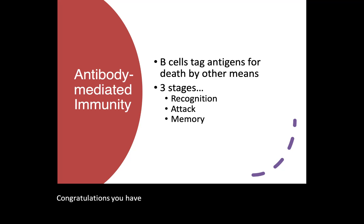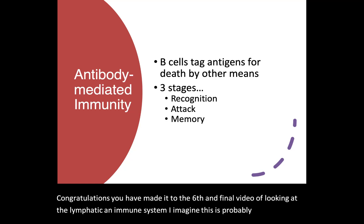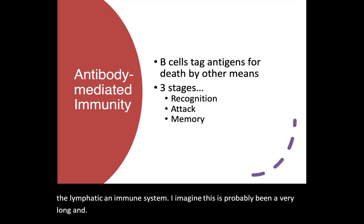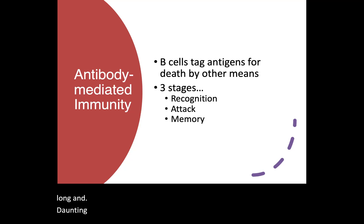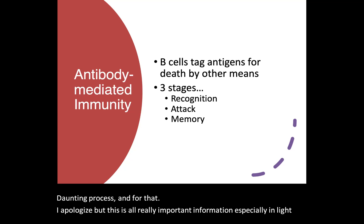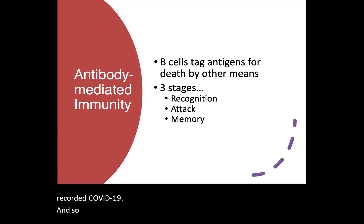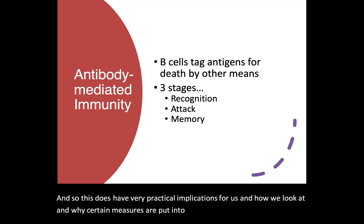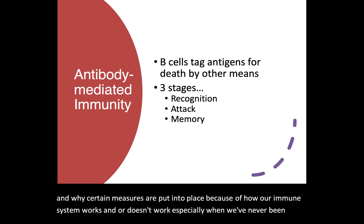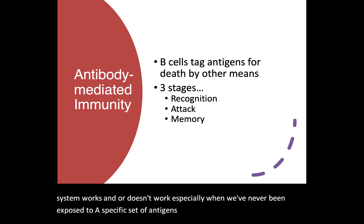Congratulations, you have made it to the sixth and final video of looking at the lymphatic and immune system. I imagine this has probably been a very long and daunting process, and for that I apologize, but this is all really important information, especially in light of viruses and illnesses that go around, such as right now, as this video is being recorded, COVID-19. This does have very practical implications for us and how we look at why certain measures are put into place because of how our immune system works, especially when we've never been exposed to a specific set of antigens before and how that can very quickly spread through a population.